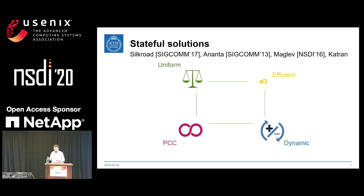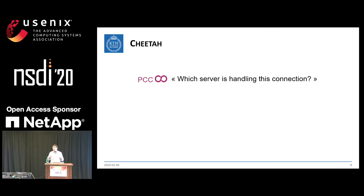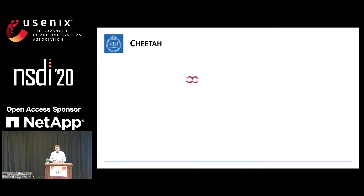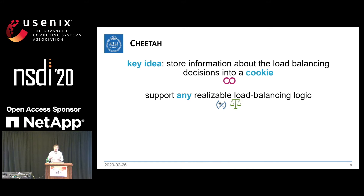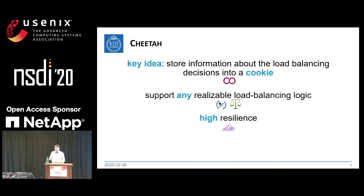In our system, called Cheetah, we try to satisfy all those requirements by answering the question of which server is handling this connection in a different way. In Cheetah, we ask the user to remember for us — that's the key idea. We store the load-balancing decision into a cookie embedded inside the packet header of a connection, and arrange for the cookie to come back with every packet from the client. This allows any realizable load-balancing mechanism — round-robin, least-loaded, newly-added server selection, or draining — and leads to very high resilience, because unlike a stateful load balancer, the state travels with the packet.